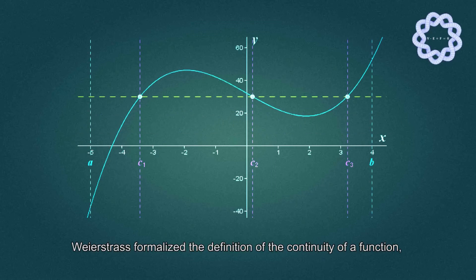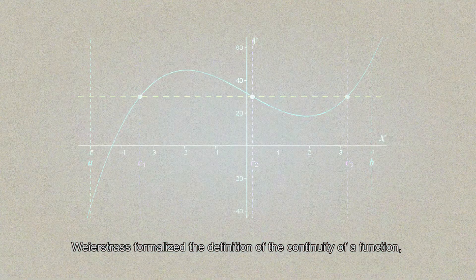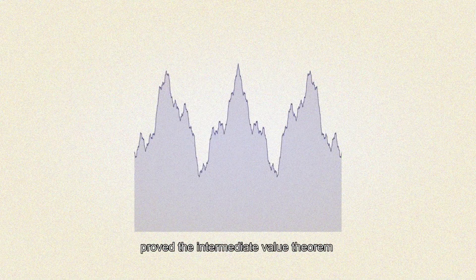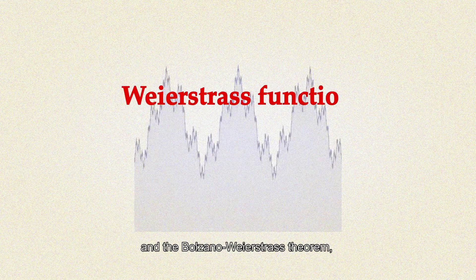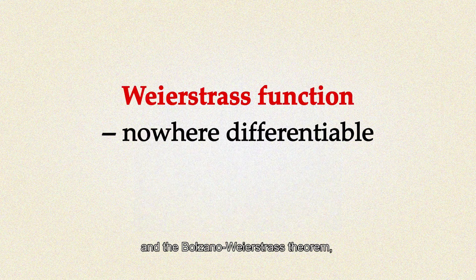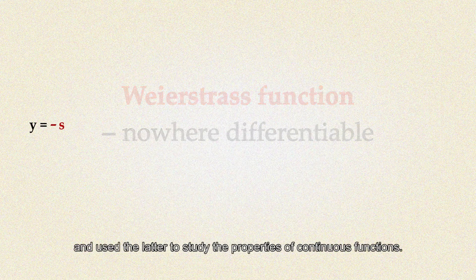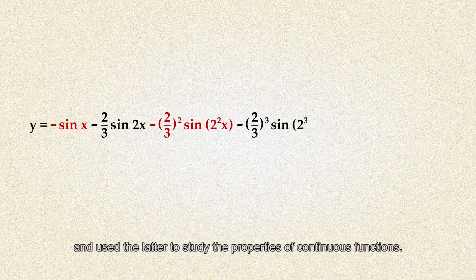Weierstrass formalized the definition of the continuity of a function, proved the intermediate value theorem and the Bolzano-Weierstrass theorem, and used the latter to study the properties of continuous functions.